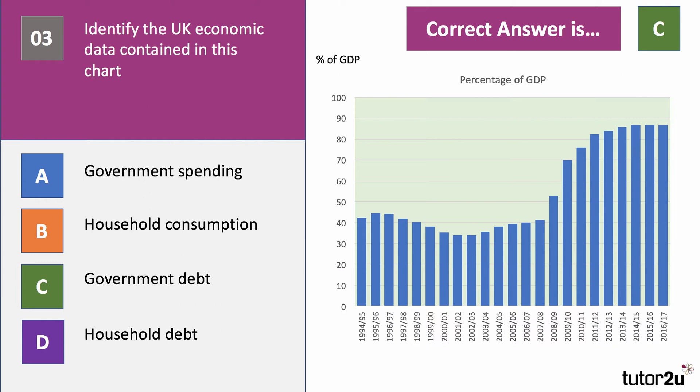The debt has continued to rise in recent times, although it looks as if the government debt-to-GDP ratio is stabilising at around 85% of national income.